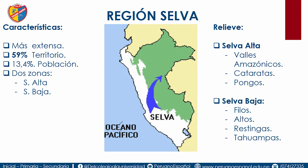En la selva baja encontramos distintos relieves. Los filos son zonas madereras donde se pueden construir carreteras. Los altos son zonas urbanas donde la gente puede vivir. Las restingas o barrizales se inundan esporádicamente y la gente puede sembrar; se desarrolla la agricultura de pan llevar, por ejemplo sembrando yuca. En las tahuampas hay zonas inundadas con presencia de meandros, que tienen forma de zigzag o forma de serpiente.